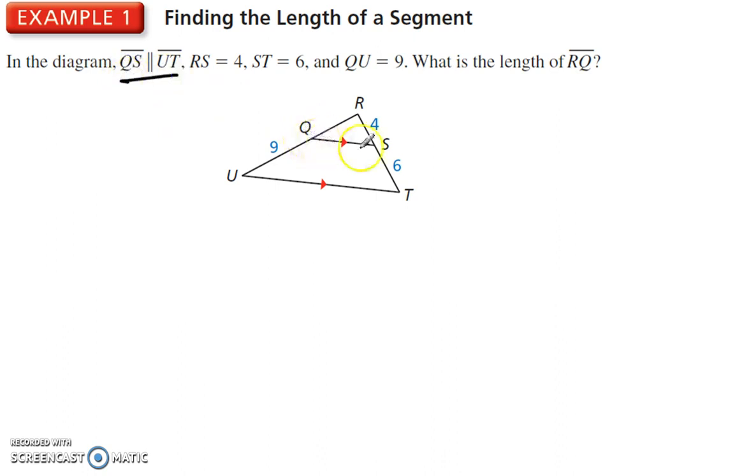We know that QS is parallel to UT, and we know these facts right here. What is the length of RQ? So that'll be our x. x to 9 is like 4 to 6.